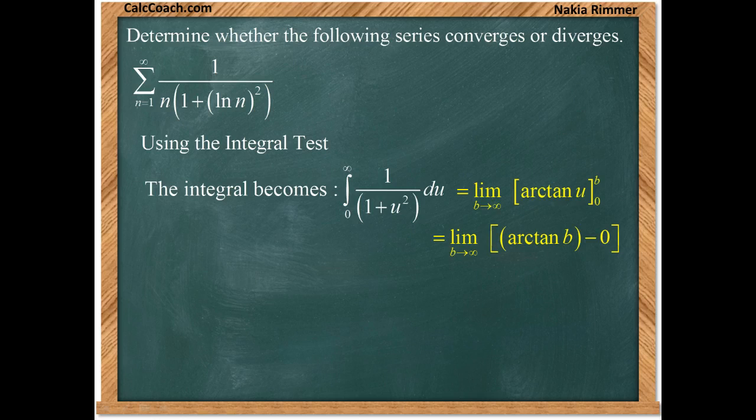Remember, arctan, though, has an asymptote. As the input grows, it can get a little higher than pi over 2. And so, this integral is equal to pi over 2, meaning that the integral converges. If the integral is going to get to a constant, a finite constant, then it converges.